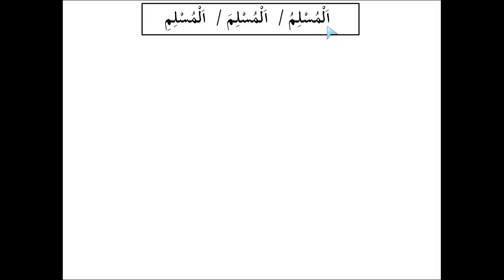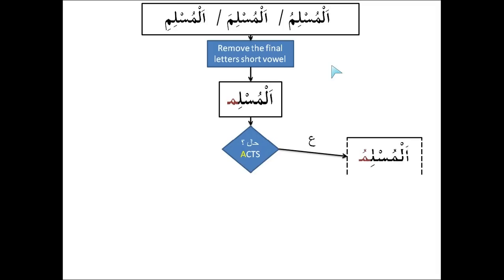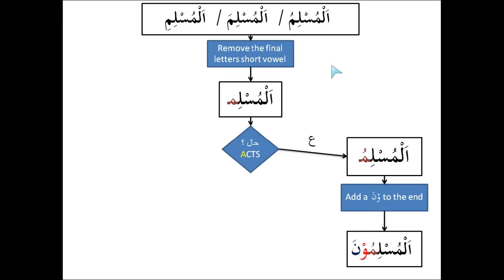If the word has أَل (the definite article) — normally when it is منصرف we just remove the نون: instead of مسلمون we write المسلمو, instead of مسلمين we write المسلمي. We do the same things: remove the final letter's short vowel, work out the حال — if it is مرفوع we add a ضمّة on the ميم and add واو with سكون and نون with فتحة, giving المسلمون. Note that the أل does not change the final vowel — the أل has no effect on the ending of the word when it is جمع المذكر السالم.